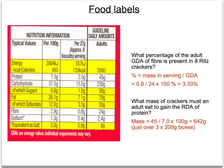Here's another question about protein. What mass of crackers must an adult eat to gain the recommended daily amount of protein? Ritz crackers are not the greatest source of protein. The recommended daily amount for an adult is 45 grams, and even 100 grams of these crackers only gives you 7 grams. So to work out how many lots of 100 grams you need to eat: 45 divided by 7, multiplied by 100 grams, gives you 642 grams of crackers.